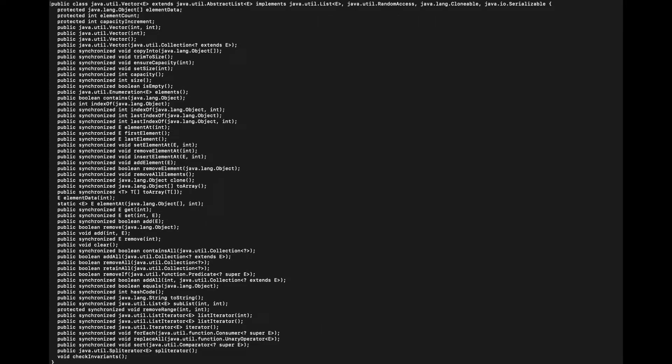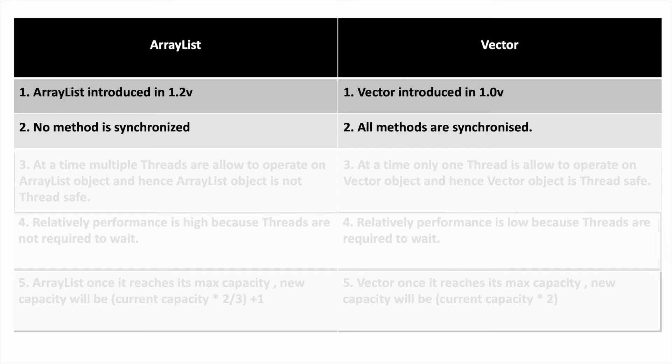If you see the Vector class profile, all the methods — ensureCapacity, setSize, capacity, size, isEmpty, indexOf, removeAll, removeElement, addElement, insertElement, removeElement — have the synchronized keyword before the method name. So, all methods of the Vector class are synchronized.